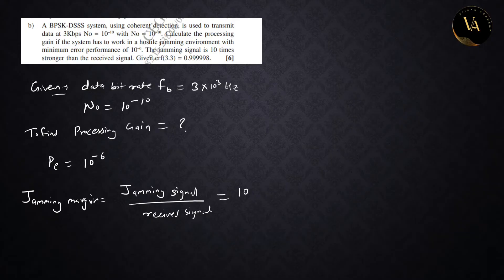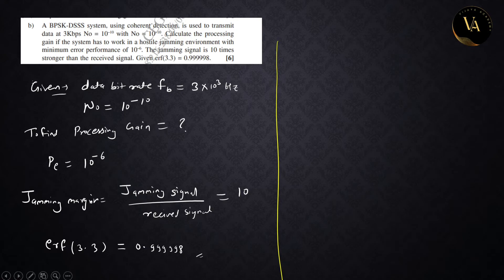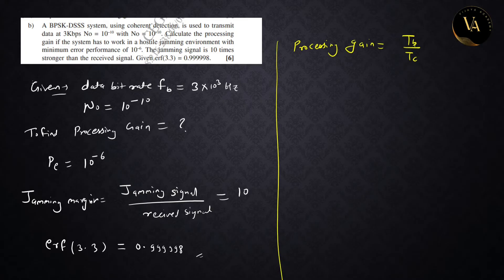Jamming margin is 10, and the other value given is Erf 3.3, whose value is 0.99998. Here we will find the processing gain using the formula. Processing gain is approved TB upon TC — the ratio of bit rate duration to chipping time duration.